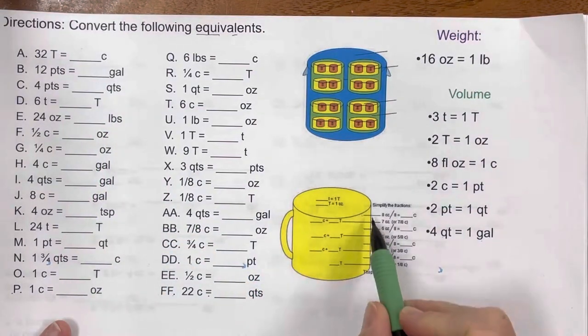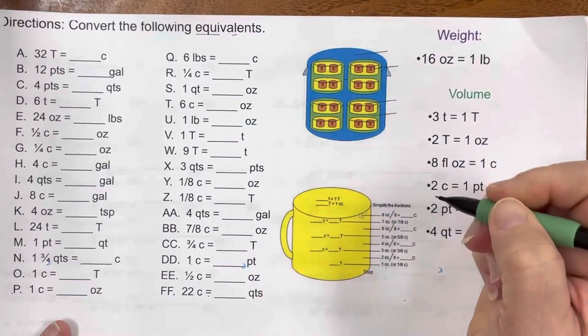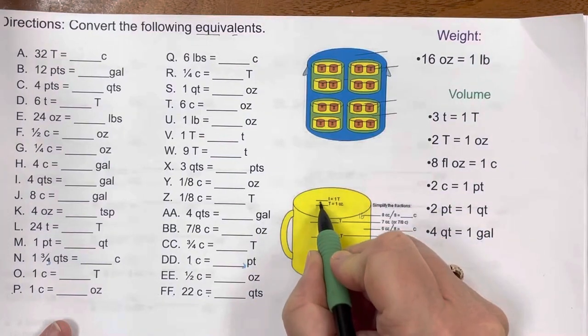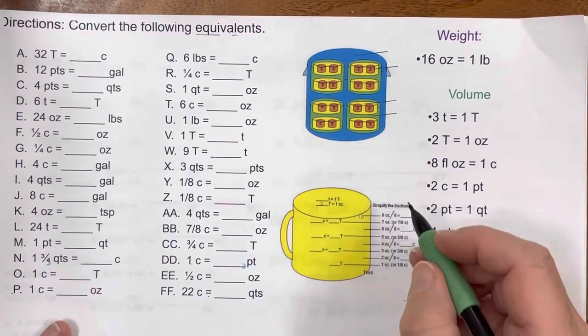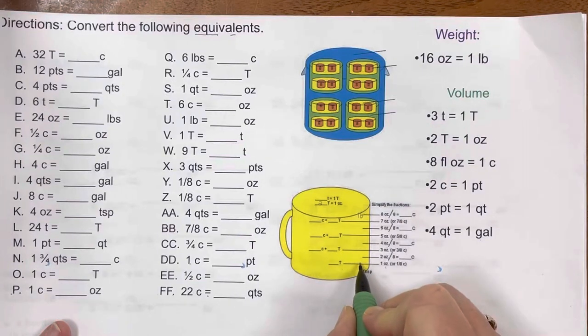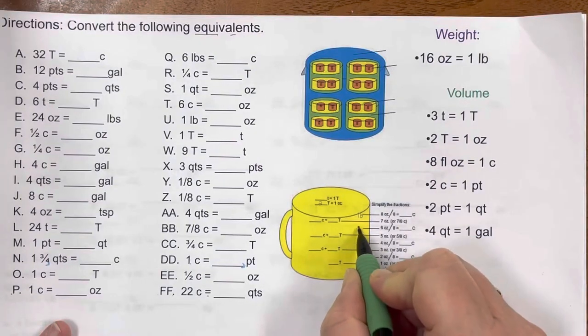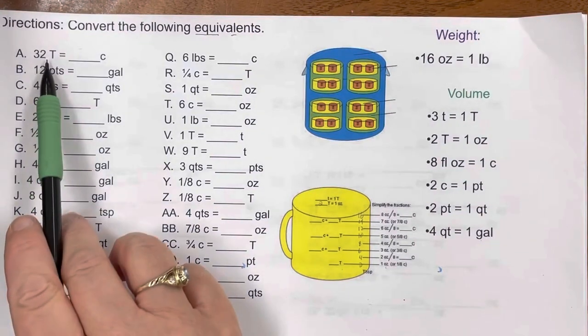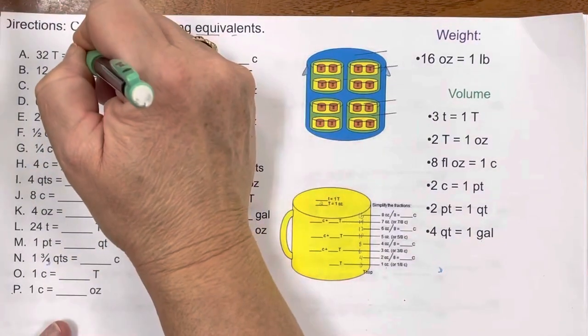If you remember from doing this demonic device, you will know that there are 16 tablespoons in a cup. There are 2 tablespoons in an ounce and there are 8 ounces in a cup. So 2 times 8 is 16. So if each ounce is 2 tablespoons, that's 2, 4, 6, 8, 10, 12, 14, 16 tablespoons in a cup. So I have 32 tablespoons. I know that 16 goes into 32 evenly 2 times. So my answer would be 2 cups.